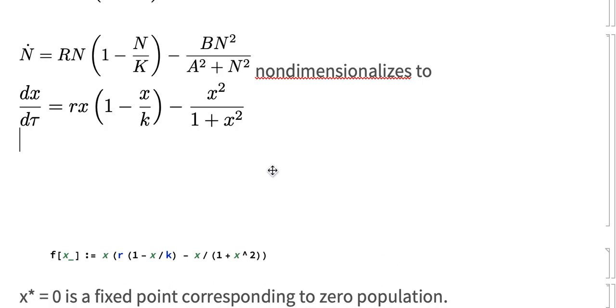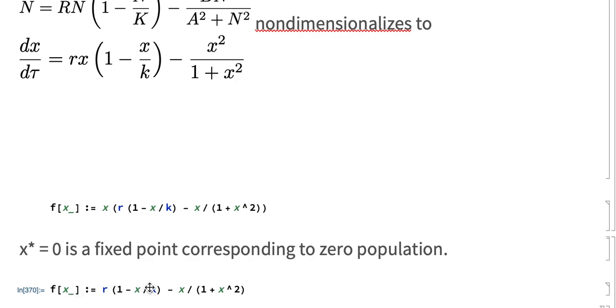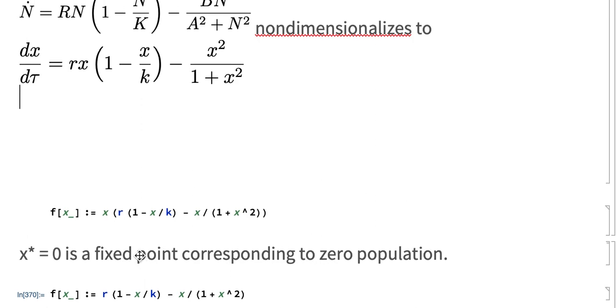That's not something we're so interested in, we're interested in the positive population fixed points. And so to think about those, I actually want zeros of this other function, this function that was left behind when I factored out the X.